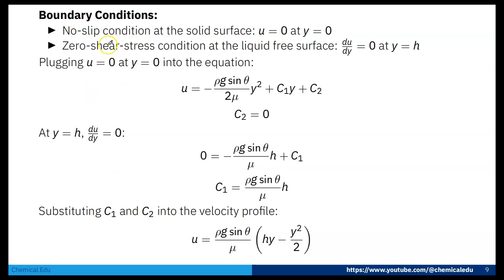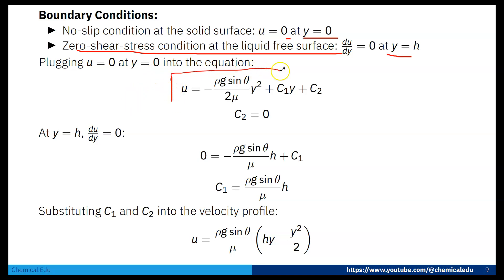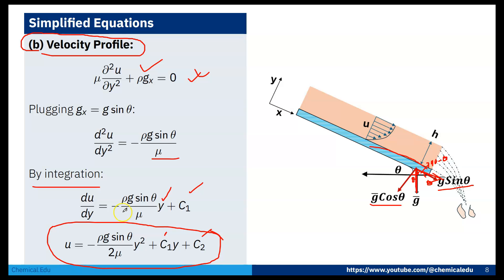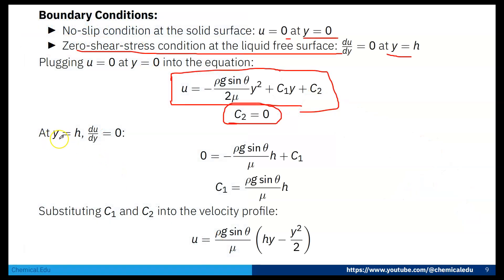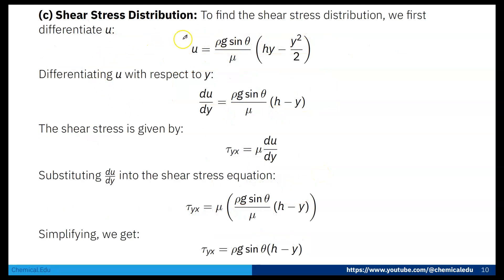The boundary conditions are: (1) no-slip at the solid surface — u = 0 at y = 0, giving C2 = 0; and (2) zero shear stress at the free surface — du/dy = 0 at y = h, giving C1 = ρg sinθ · h / μ. Substituting these constants, the velocity profile is: u = (ρg sinθ / μ)(hy − y²/2).